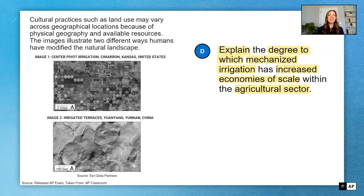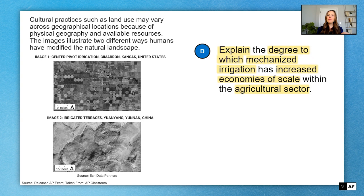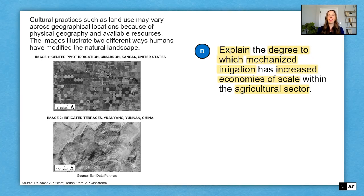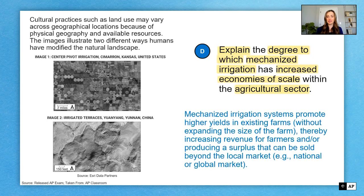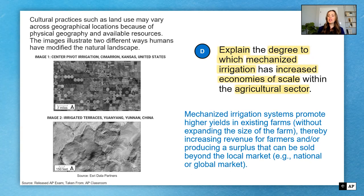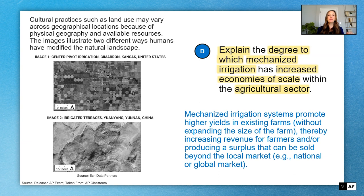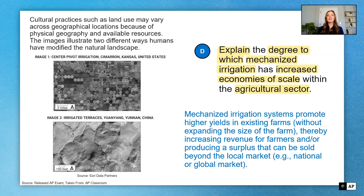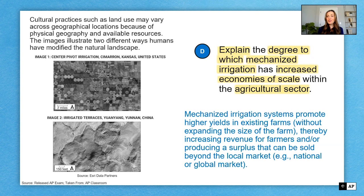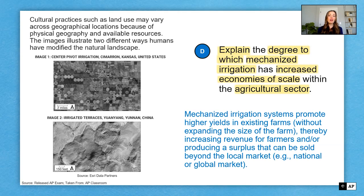If a question asks you to explain the degree to which, the first thing you want to do is decide whether you think it is a high degree, a medium degree, or a low degree, and say that in your answer. Mechanized agriculture or mechanized irrigation has increased economies of scale within the agricultural sector to a high degree, for instance. Then I would go on to explain why it is a high degree. So you've seen my examples here, my explanation. I've got specifics. But the very first sentence that I would have is clearly stating what degree. High degree, medium degree, or low degree. If that's missing from your answer, you may have tons of beautiful information, but you won't get the points. So tuck that away for AP test day to remember how to tackle a question that looks like this.